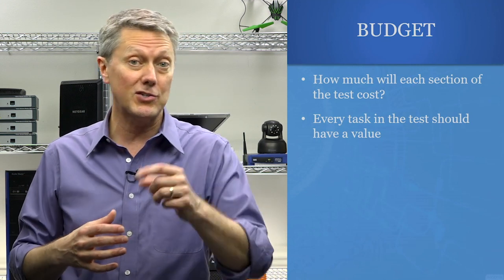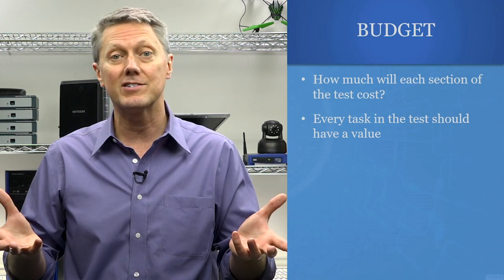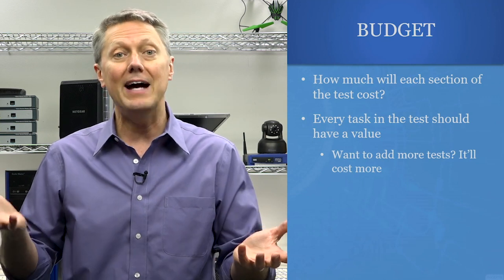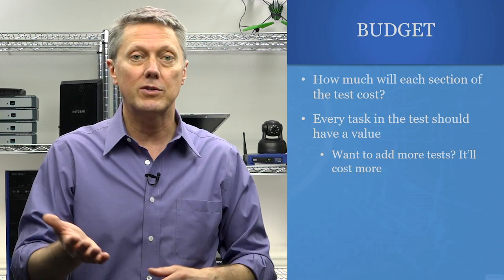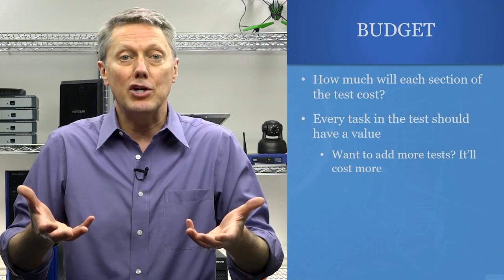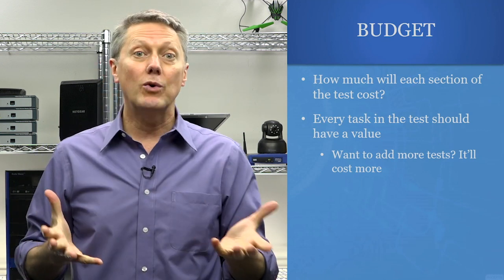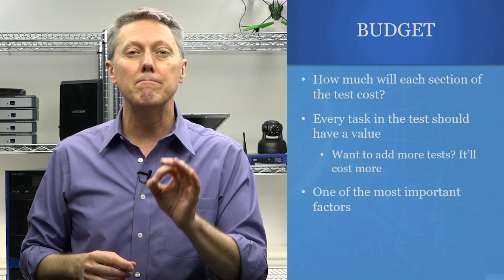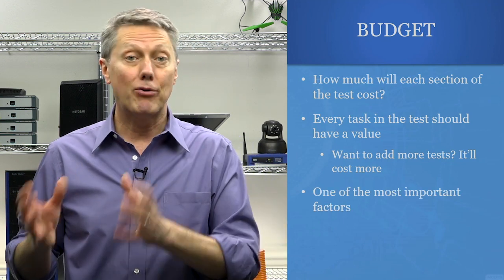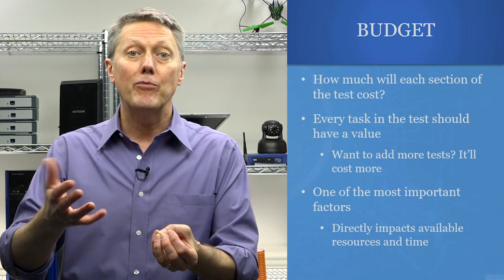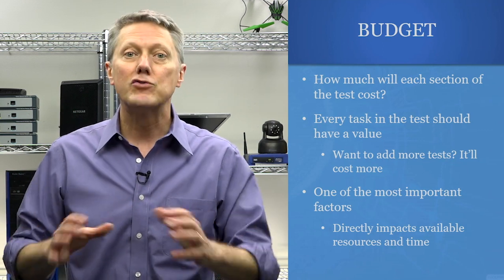Your client may come back — and we talked about scope creep earlier — asking for more tests. You can easily say yes, but it's going to cost this much more money, and then ask if it's worth it. If they say sure, do the extra tests, we'll pay for it, then you can increase the budget based on the new scope. It's very important to manage that scope because it's very tightly tied to budget. In fact, budget is probably one of the most important aspects of an entire penetration testing project. If you don't control the budget, you'll end up going over budget or giving away time for free — you never want to do that. Make sure you look at budget within the context of all of your plans and understand how much everything costs throughout the entire project plan.